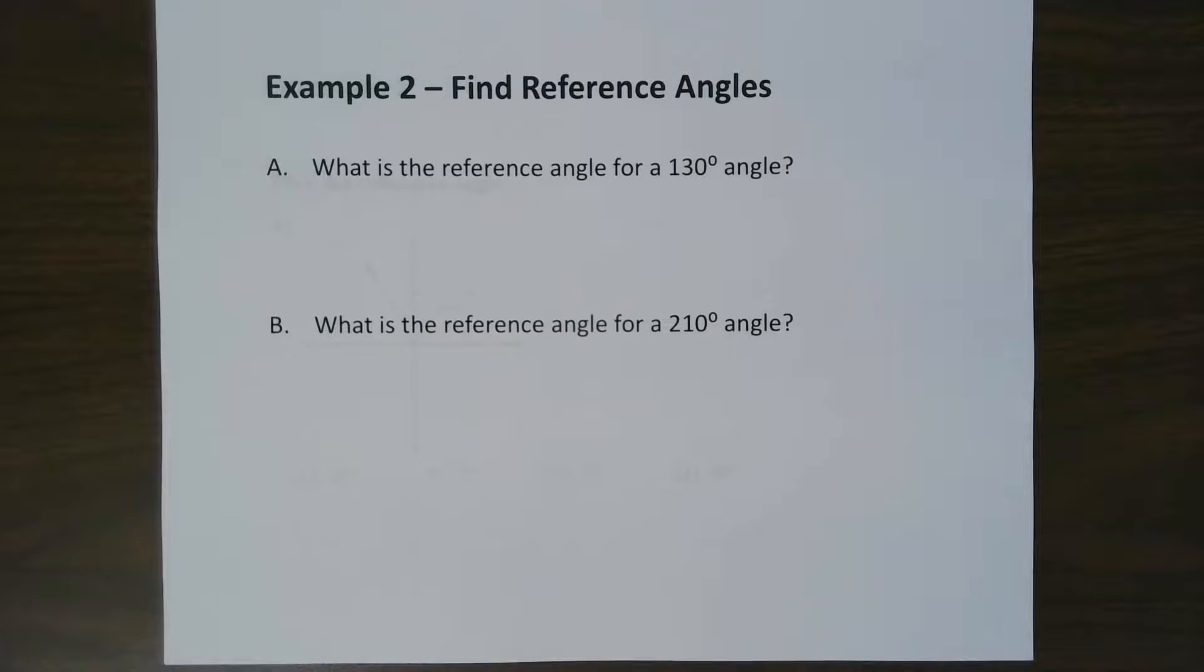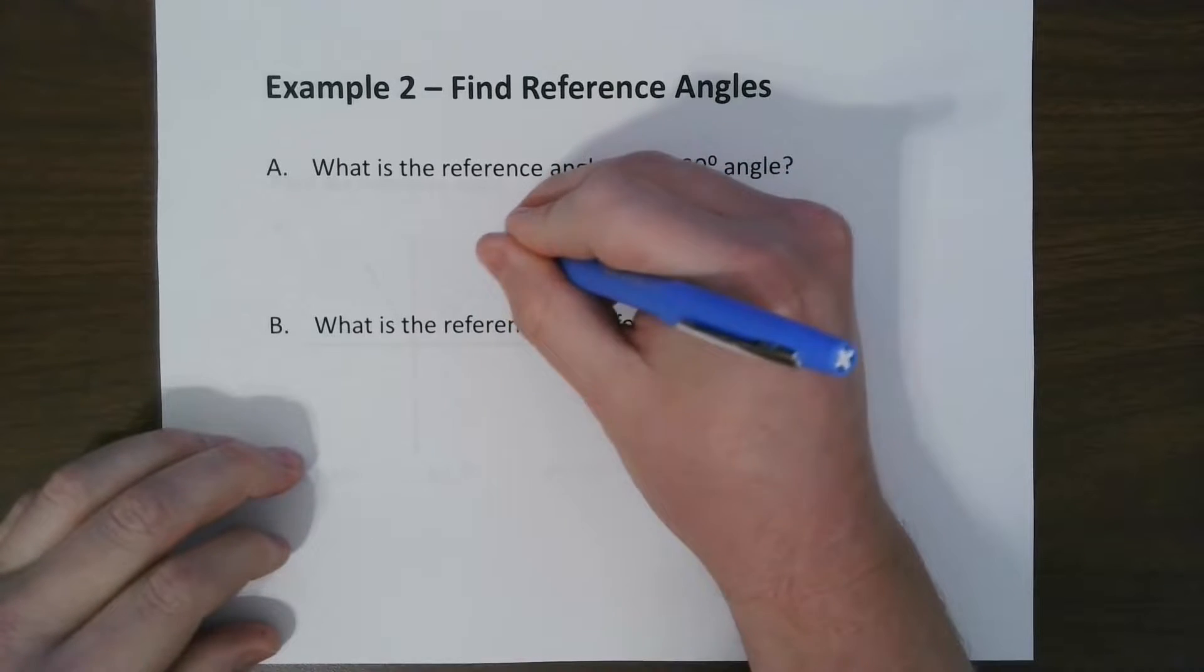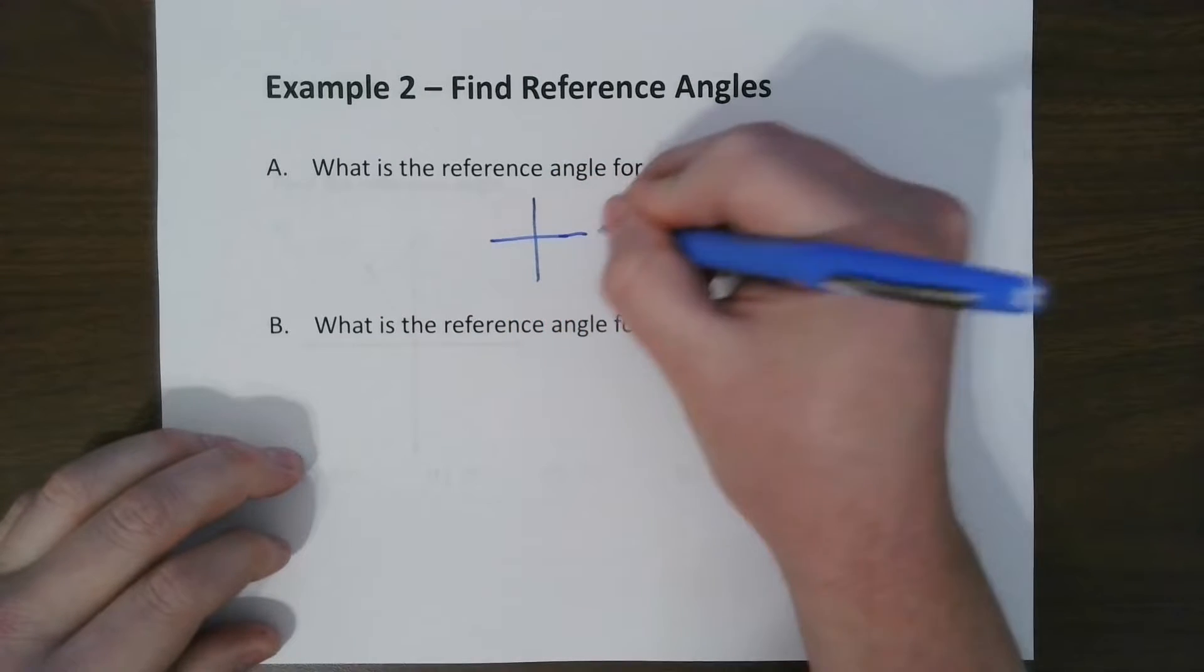So what we're looking at here is these things called reference angles. What a reference angle is, is the angle formed between the given angle and the x-axis. So for example, this is 130 degrees. So just basic coordinates, we know this is 0,